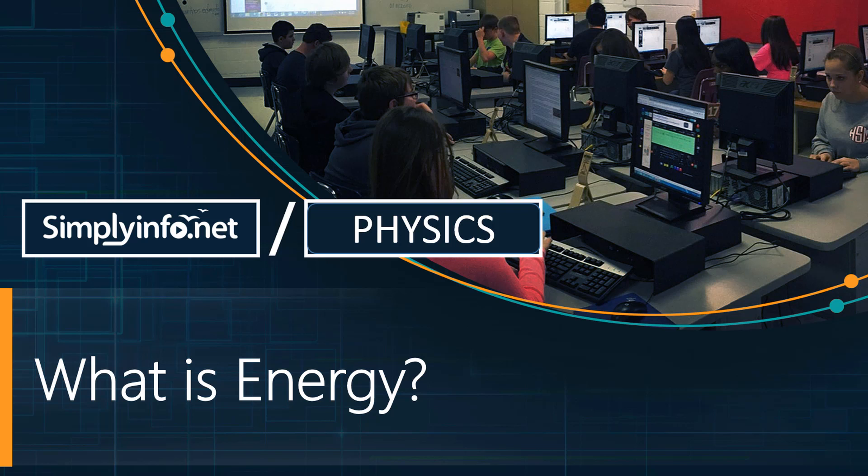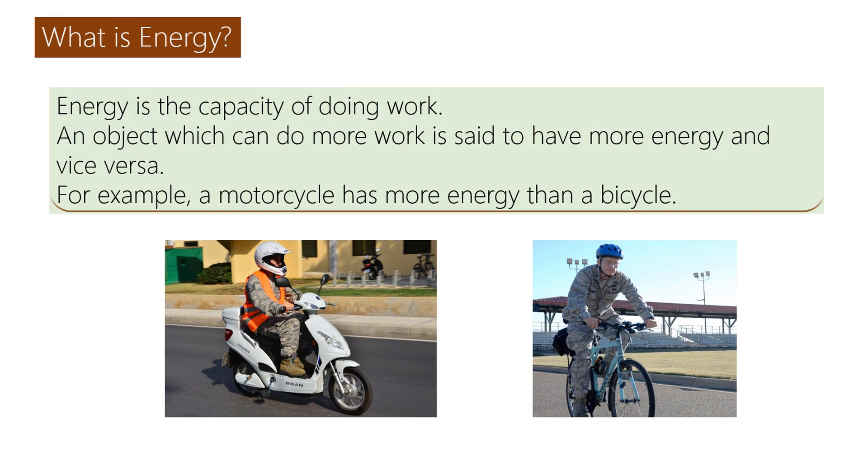What is energy? Energy is the capacity of doing work. An object which can do more work is said to have more energy and vice versa. For example, a motorcycle has more energy than a bicycle.